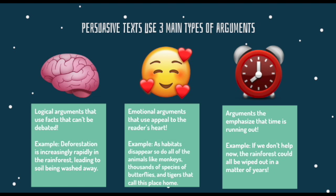The next type of argument is an emotional argument that appeals to the reader's heart — how they feel. So an example from yesterday might be: as habitats disappear, so do all of the animals like monkeys, thousands of species of butterflies, and tigers that call this place home. I'm calling to those emotions, making my reader picture those sweet animals that might be lost if we don't act.